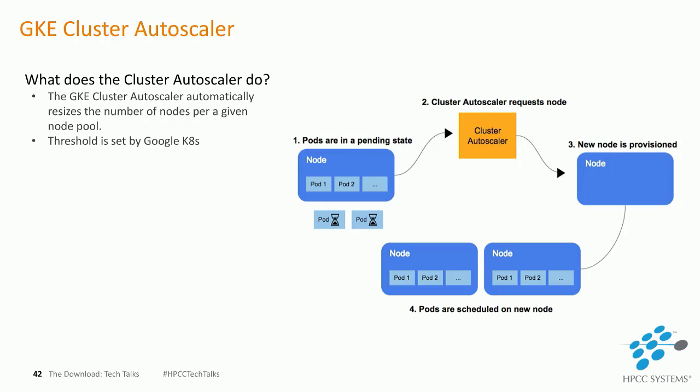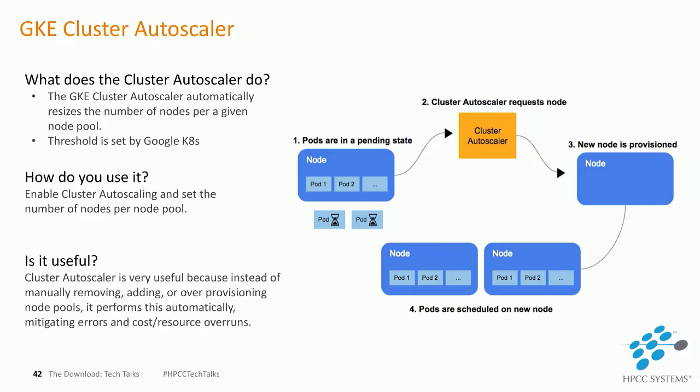Now I'll be covering one of Google Kubernetes' features, which is their autoscaler. The GKE cluster autoscaler automatically resizes the number of nodes per a given node pool. The resize is based on the demands of the workload, which is triggered by a constraint set by the user. To use cluster autoscaler, enable it and set the minimum and maximum number of nodes per node pool, and the rest will be automatically taken care of. It is very useful because instead of manually removing, adding, or over-provisioning node pools, it performs these tasks automatically, mitigating errors and cost resource overruns.